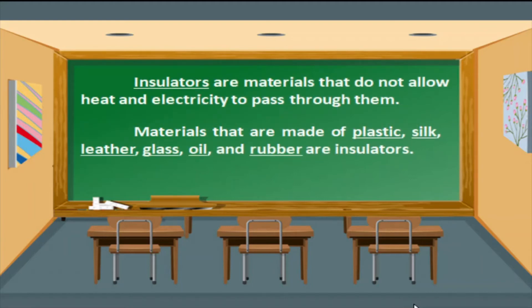Insulators are materials that do not allow heat and electricity to pass through them. Materials that are made of plastic, silk, leather, glass, oil, and rubber are examples of insulators.